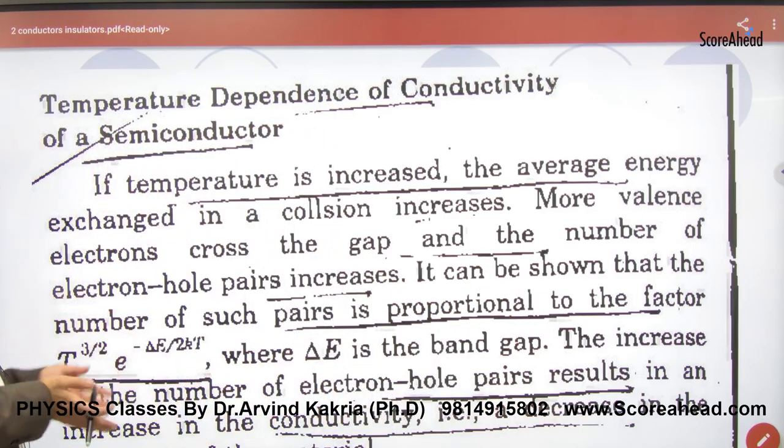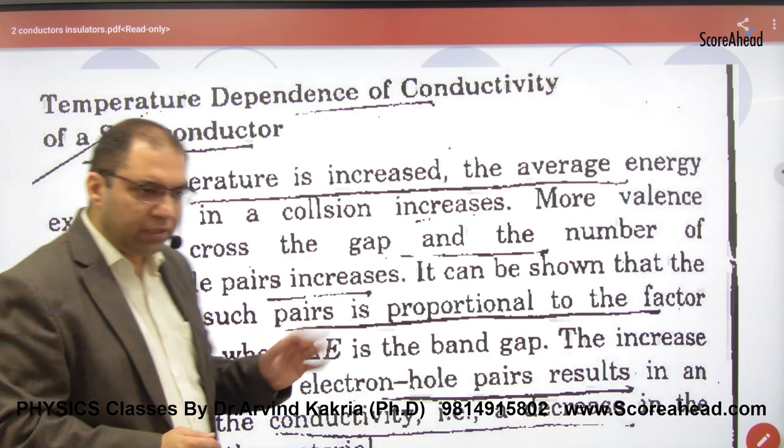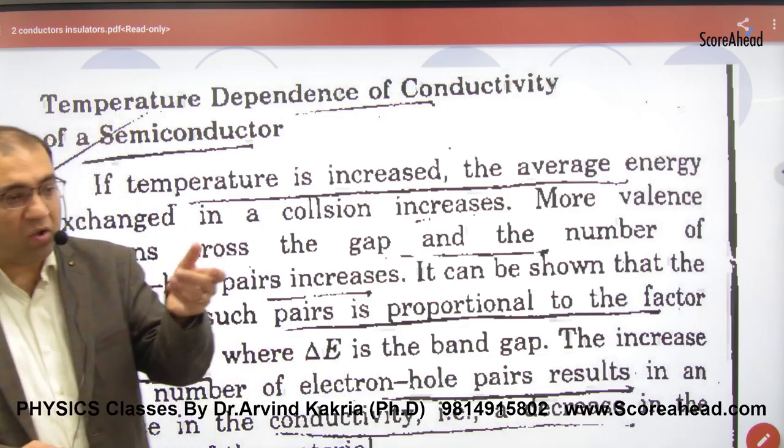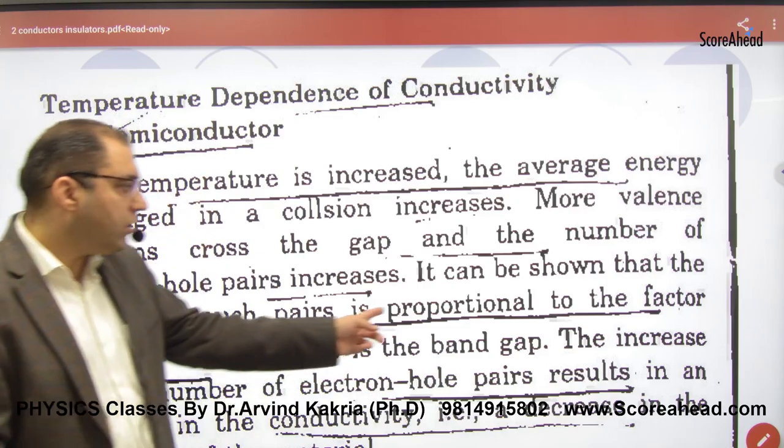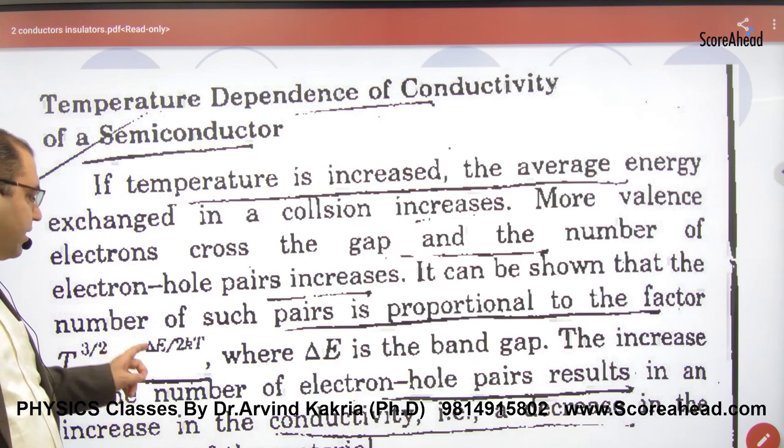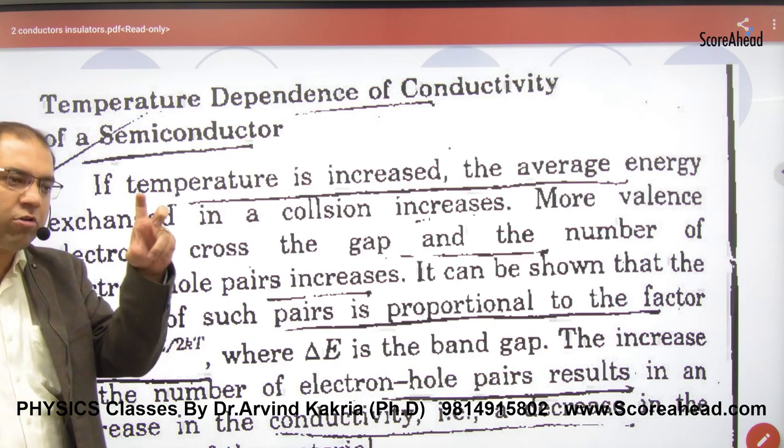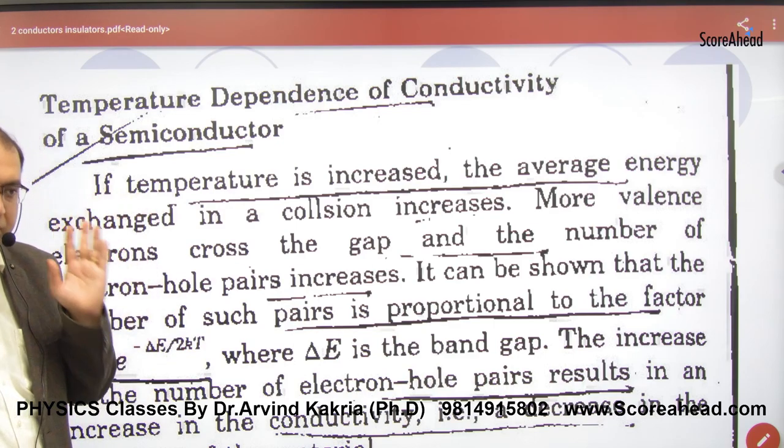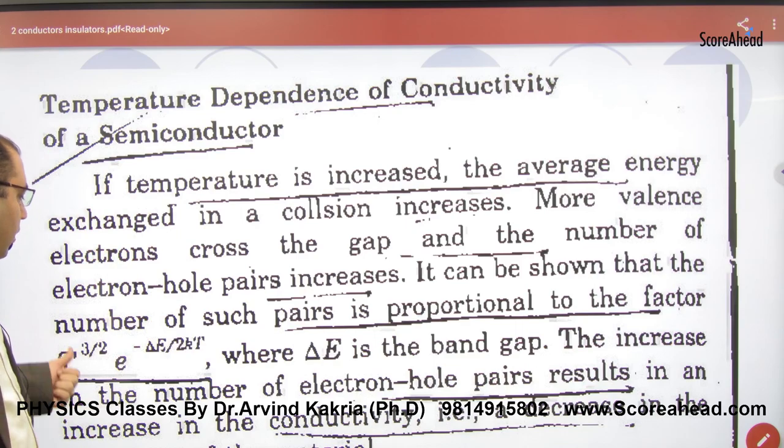It can be proven that the number of such pairs is proportional to the factor T^(3/2) × e^(-ΔE/2kT), where ΔE means the forbidden energy gap of the substance and T is for temperature.